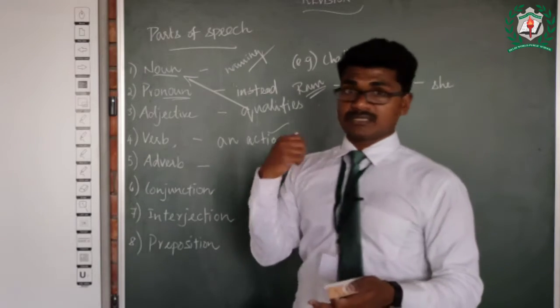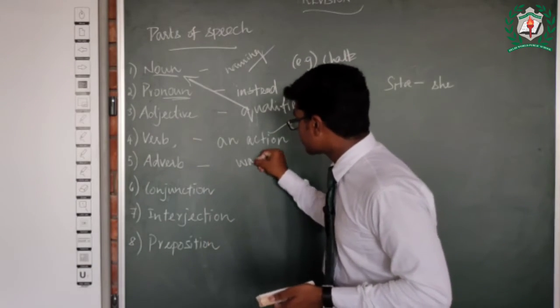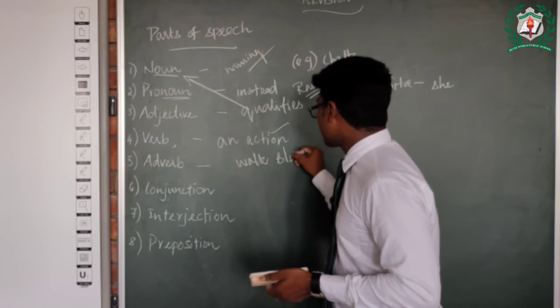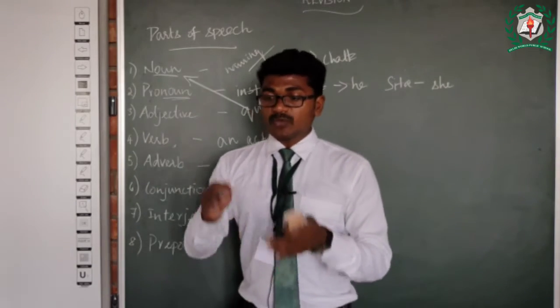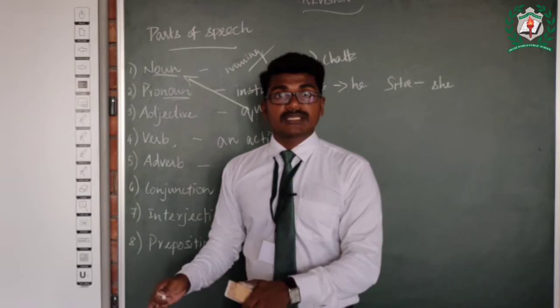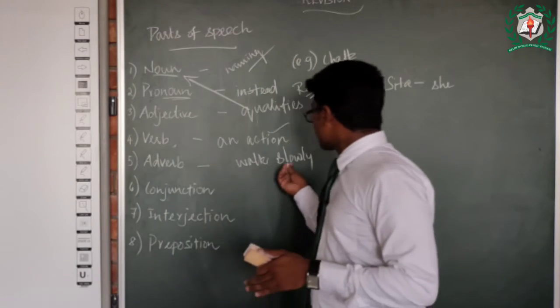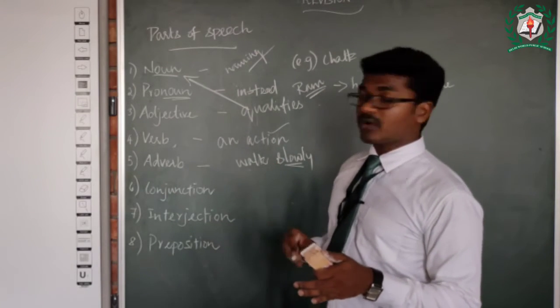Example, walk. So he walked slowly. He walked slowly. How he walked? He walked slowly. Now 'slowly' modify the action performed here.